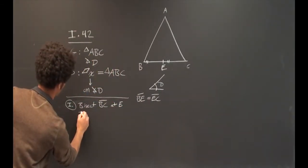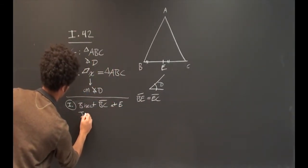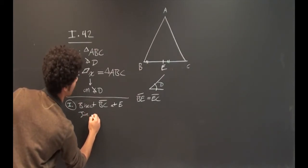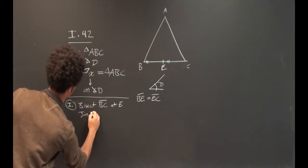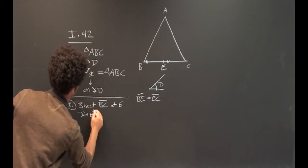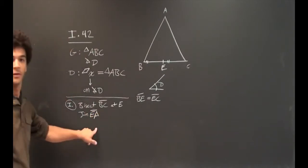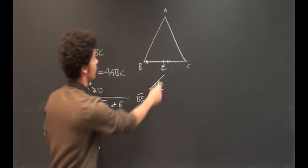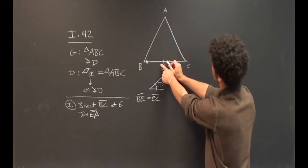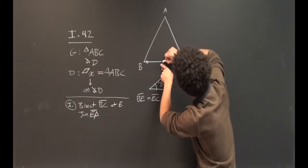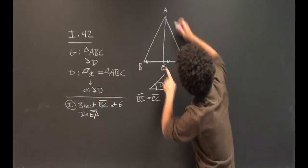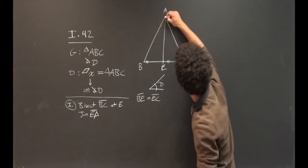We're also going to join the line EA — taking this point E and joining it to point A with a single line.